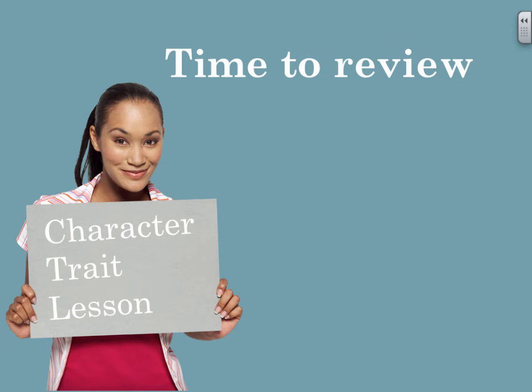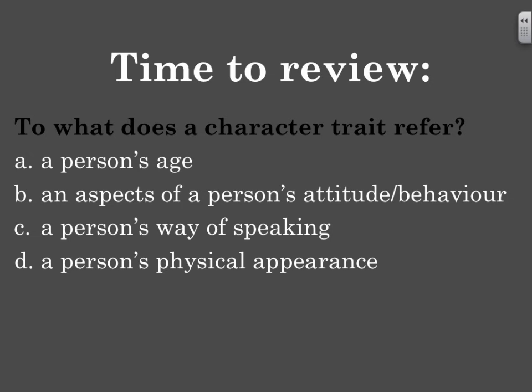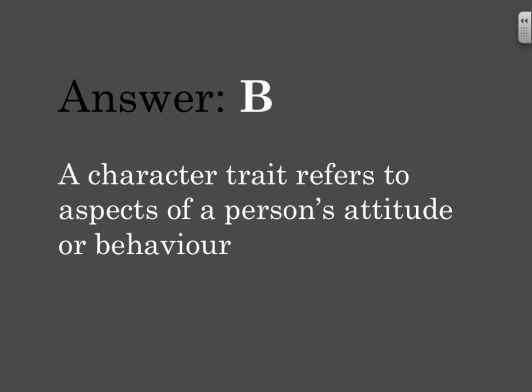Let's review using multiple choice questions. To what does a character trait refer? A — a person's age. B — an aspect of a person's attitude or behavior. C — a person's way of speaking. Or D — a person's physical appearance. Take a minute to think your answer through. The answer is B: a character trait refers to aspects of a person's attitude or behavior.